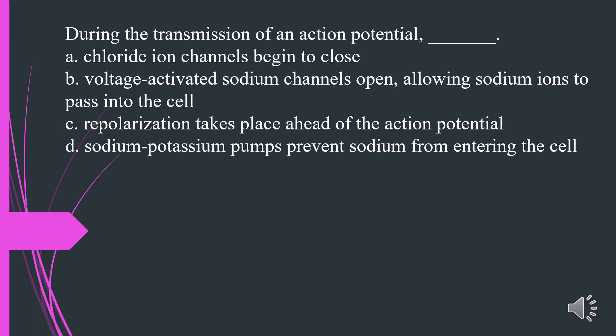During the transmission of an action potential, what occurs? A. Chloride ion channels begin to close. B. Voltage-activated sodium channels open, allowing sodium ions to pass into the cell. C. Repolarization takes place ahead of the action potential. D. Sodium-potassium pumps prevent sodium from entering the cell. The answer is B. Voltage-activated sodium channels open, allowing sodium ions to pass into the cell.